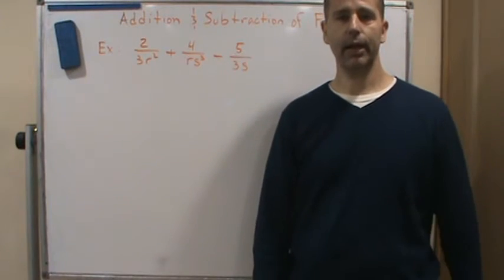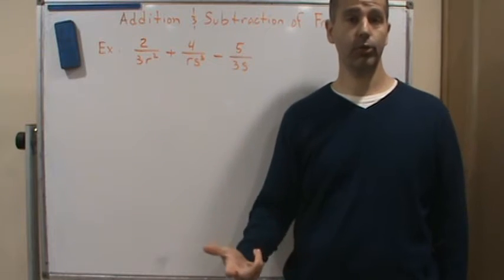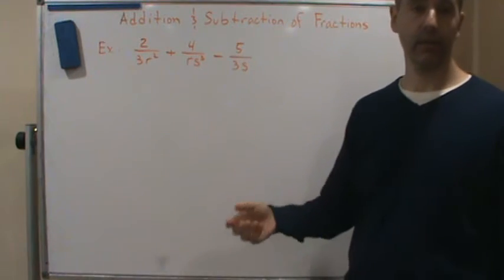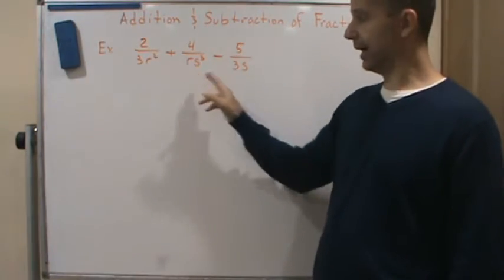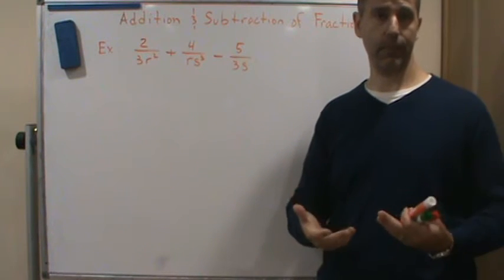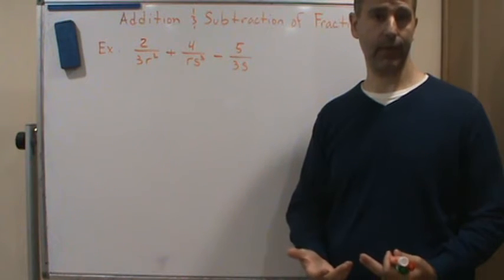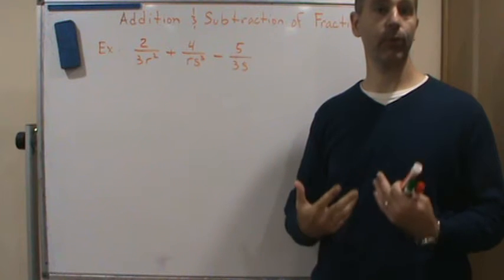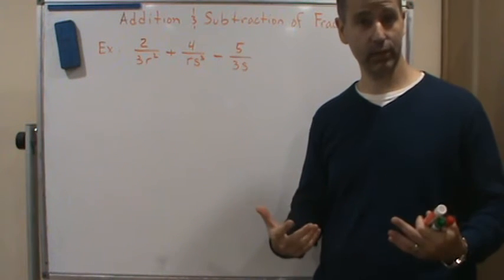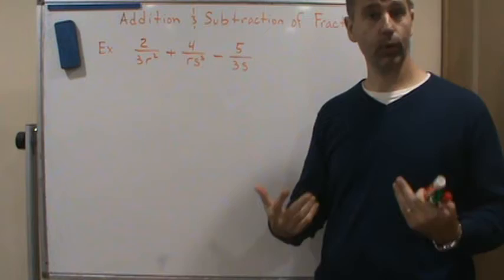Okay, so welcome back. Now in this example we're going to add and subtract fractions that do not have a common denominator. So the first step is we've got to find the common denominator, and the denominator that we always want to use that's the easiest to use is the lowest common denominator.